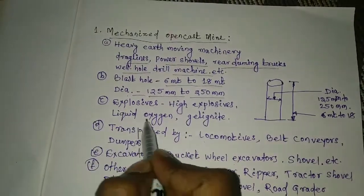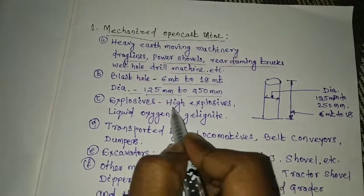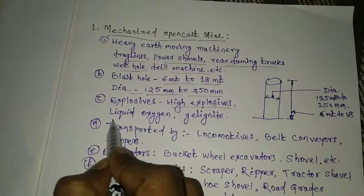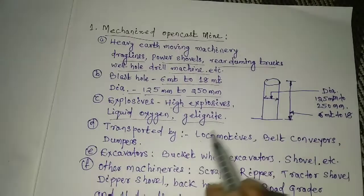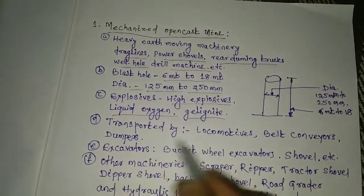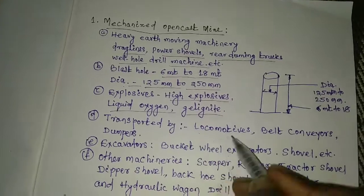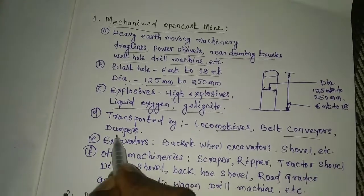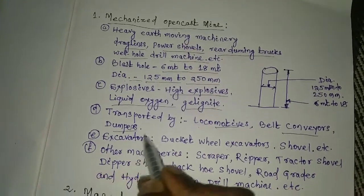Explosives are generally used: high explosives, liquid oxygen, gelatinite, and similar types. Material is transported by locomotives, belt conveyors, and dumpers.